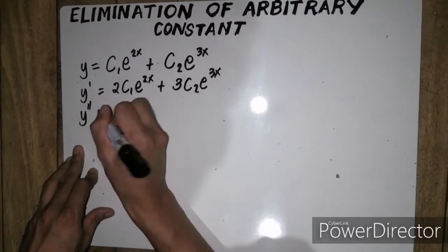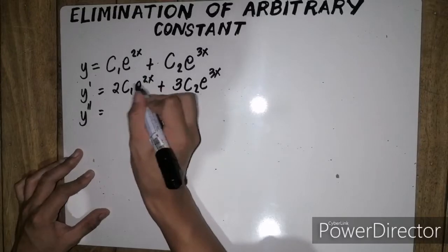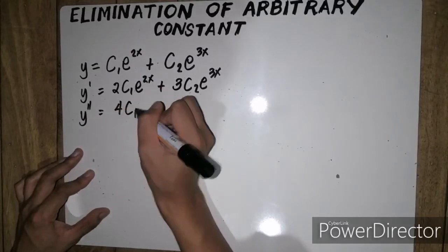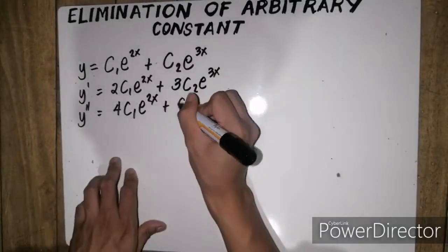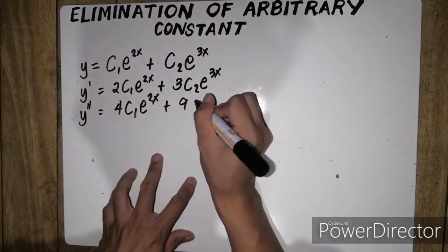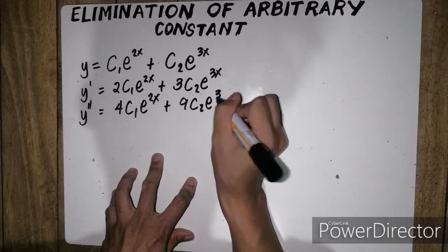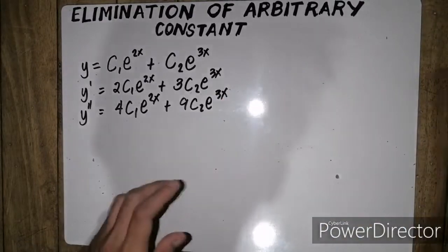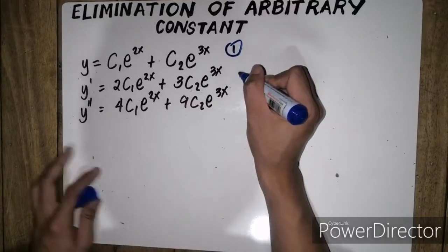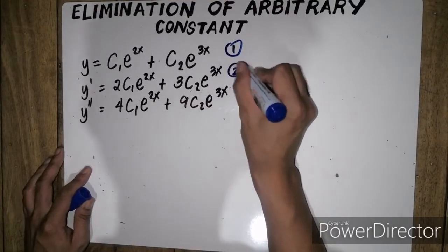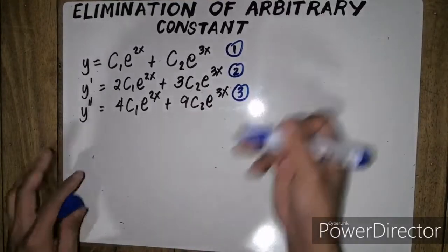Sa second derivative, we have bring down 2, so 2 times 2 is 4 c1e to the 2x plus 3 times 3 is 9 c2e to the 3x. So that means, this is our equation number 1, equation number 2, and equation number 3.